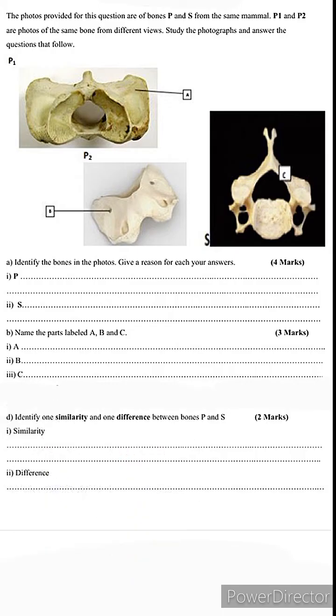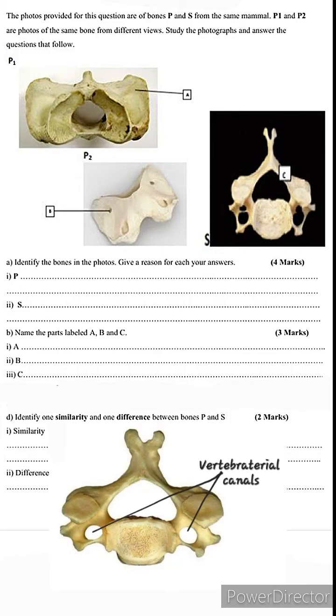If you look at the two bones in the photographs, you'll note that both bone P and S share one distinctive feature: the presence of vertebraterial canals. Vertebraterial canals are openings found on either side of the bone, only present in cervical vertebrae. These allow passage for the vertebral artery. This is a distinctive feature of cervical vertebrae.